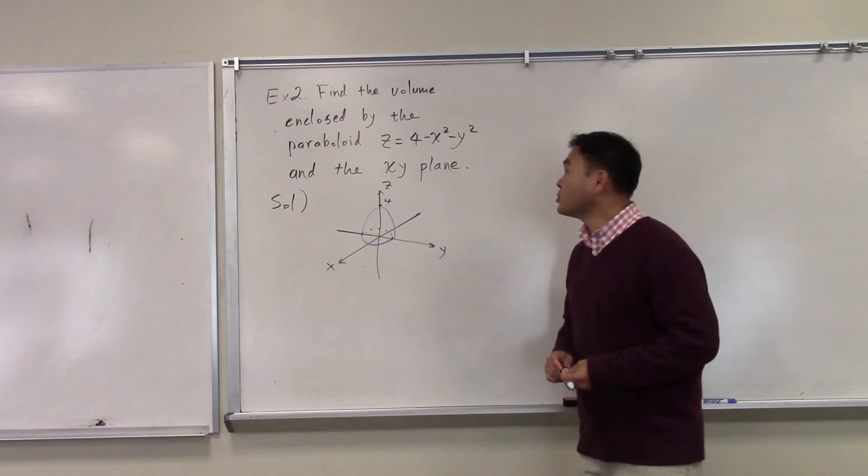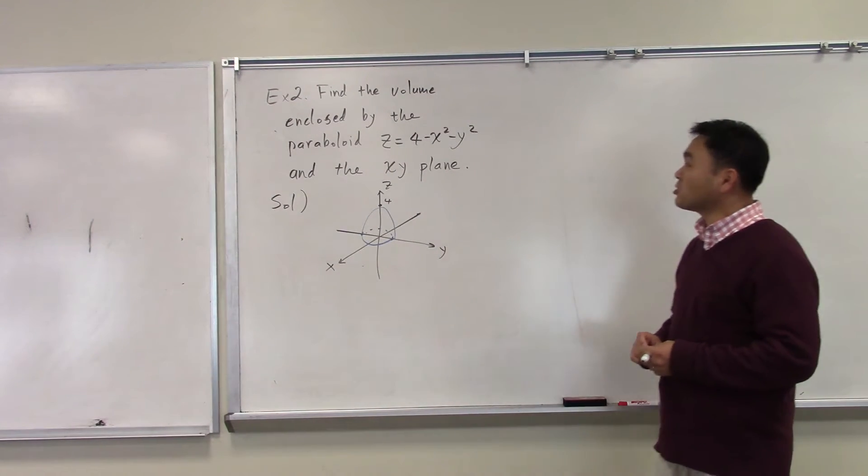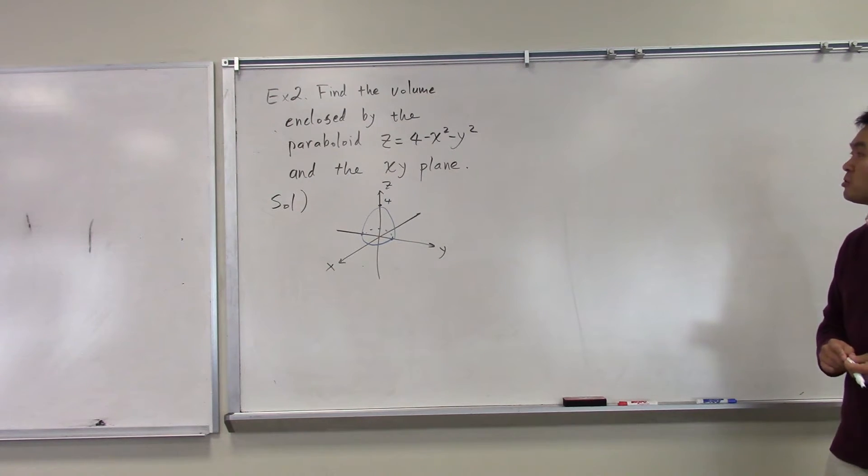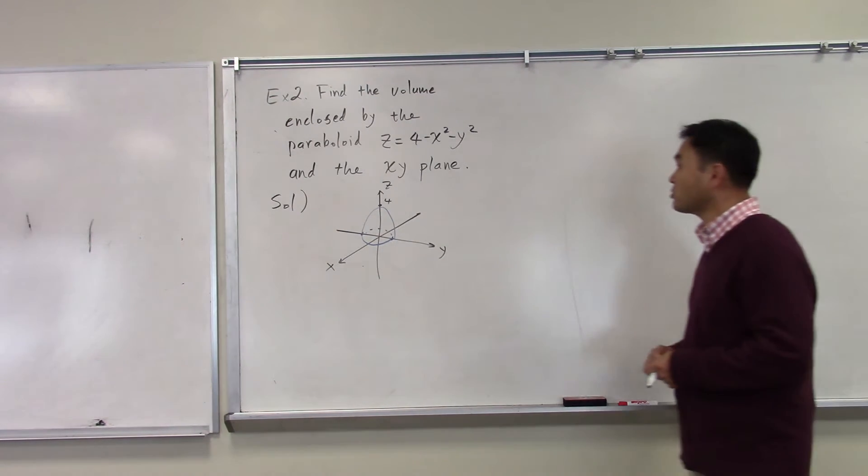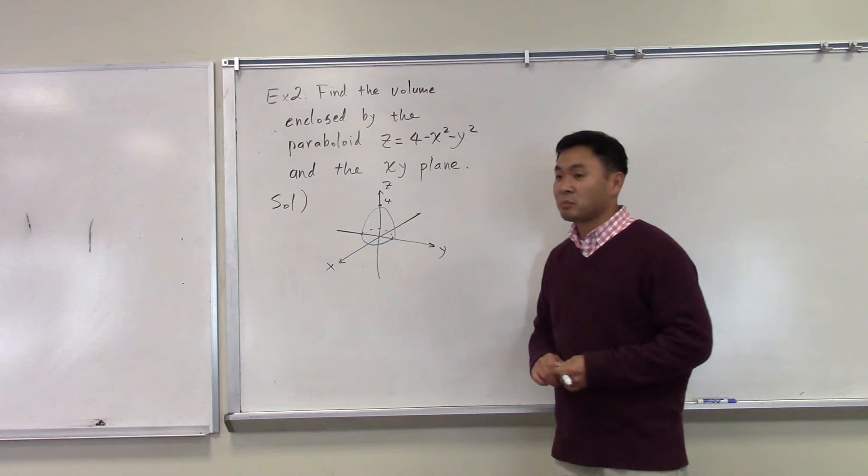This next example, we are going to find the volume enclosed by the paraboloid z equals 4 minus x squared minus y squared and the xy plane.